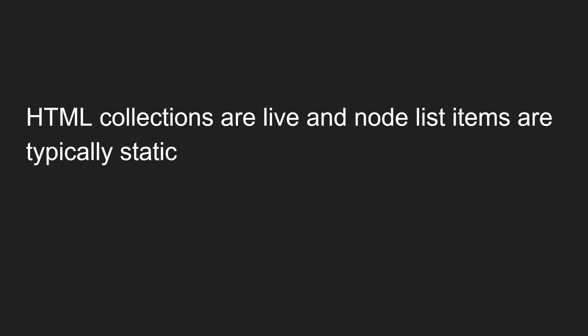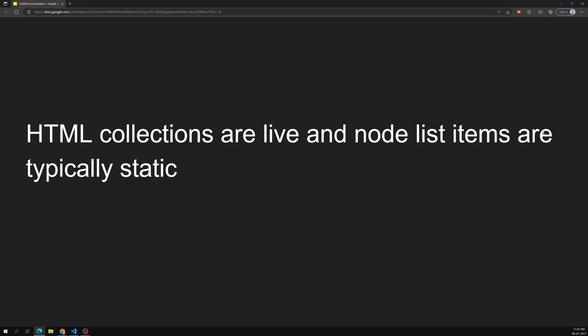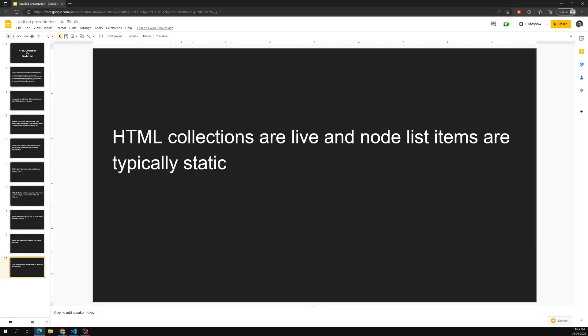The key real difference is this: HTMLCollections are live, and NodeList items are typically static. What does this mean? When the DOM is manipulated, an HTMLCollection updates automatically. A NodeList is static — it does not update. Let's see this in a practical example to understand it clearly.